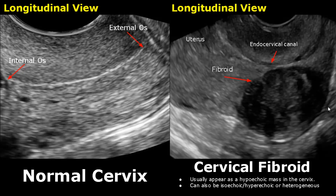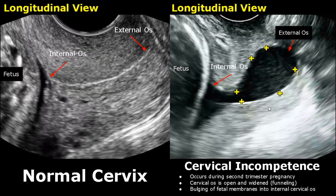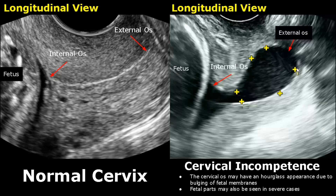In cervical incompetence, the cervix becomes dilated and this can cause second trimester pregnancy failure. The cervical os will be open and become widened. This widening is called funneling, and is due to bulging of fetal membranes into the internal cervical os. The appearance of the cervical os can have an hourglass appearance.